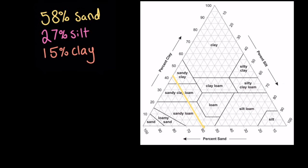Next, I'm going to use the 15% clay. So I find the 15% clay mark and we draw a line from 15% to the other side of the triangle following the direction of the lines within the triangle. And we can see that our two lines intersect at this point. So we have sandy loam.